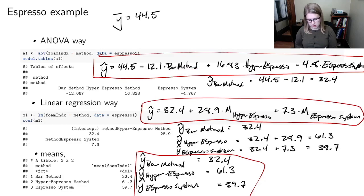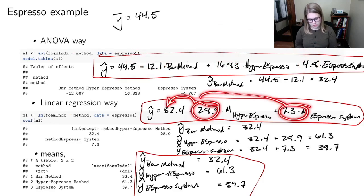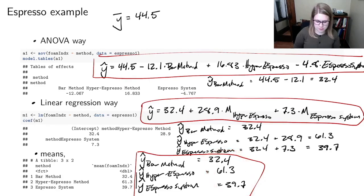If you're going to do it the linear regression way, you'd have to pick a reference category, which in this case is the bar method. And you'd put the mean for that reference category as your intercept. And then you do the difference between hyper espresso and method here and the difference between espresso system and method here. So these are comparisons to the reference group. These are comparisons to the grand mean. But these two are comparisons to the reference group. And with the means, we're not making any comparisons at all. We just have the means.